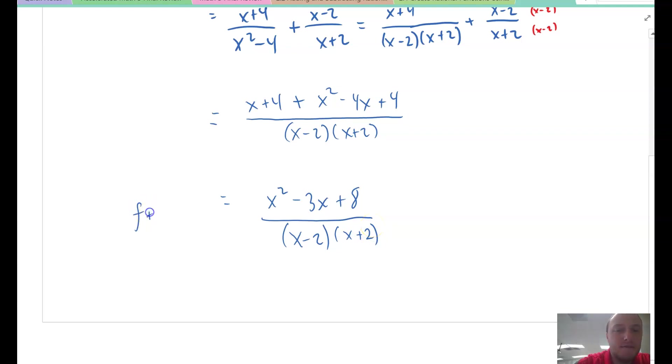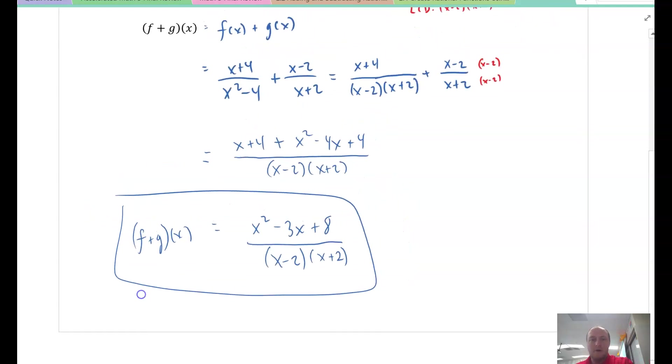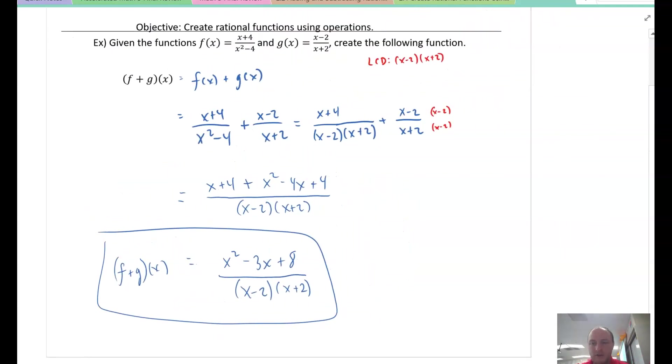This is f plus g of x. There's your function. Maybe you're wondering where are the excluded values? Why don't they ask about excluded values? There are still excluded values here, it's just the problem's not asking for them. I don't have to state my excluded values. It's not asking about any of the discontinuities. So there it is.